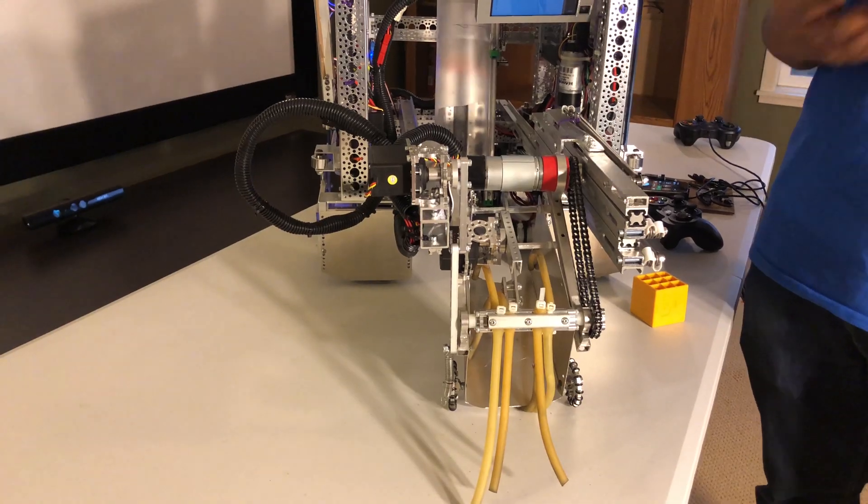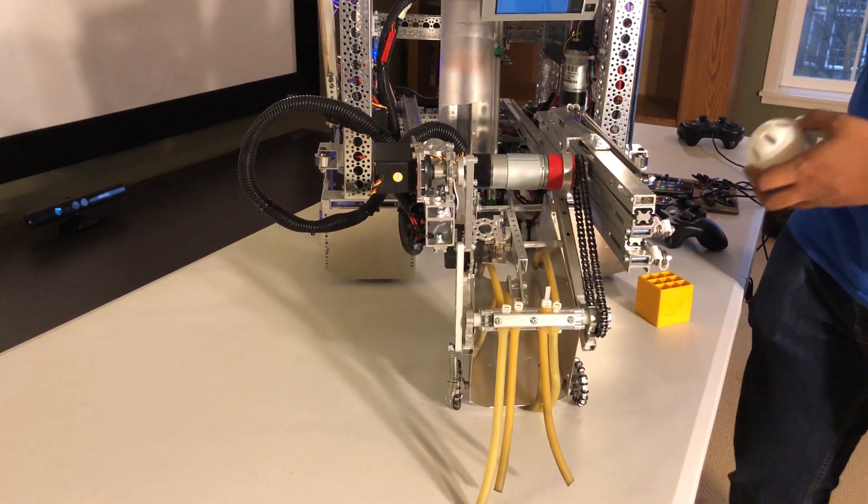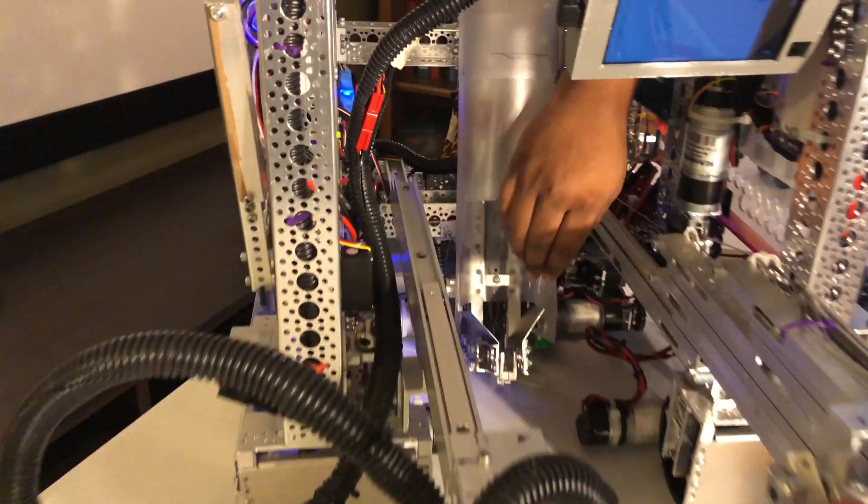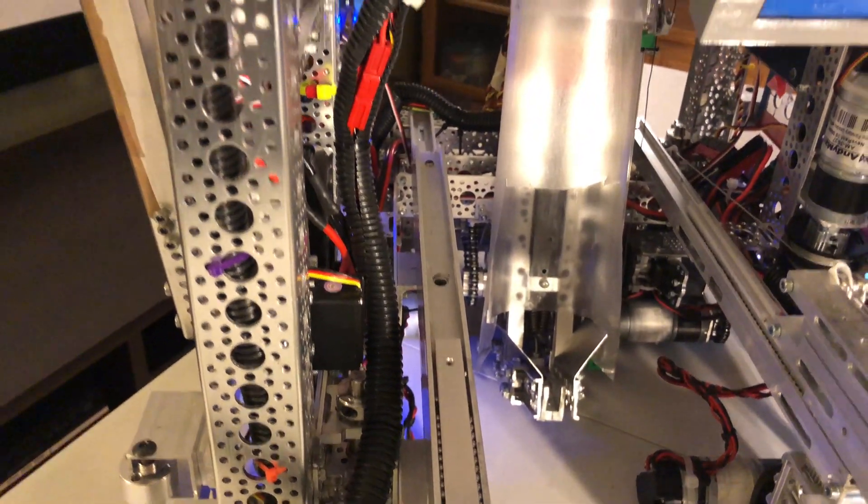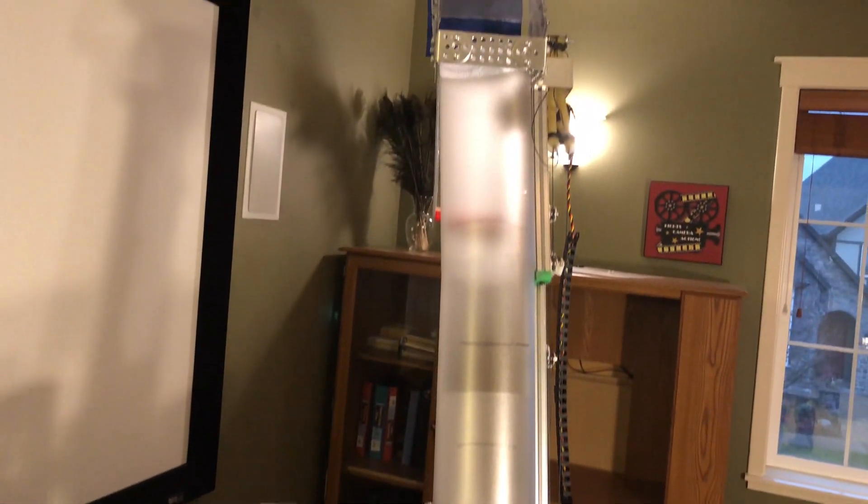In order to do that, we came up with many different designs, but eventually settled with this V. As you can see over here, this acts as a funnel to settle right onto the popper, enabling us to effectively pop to the top of our robot.